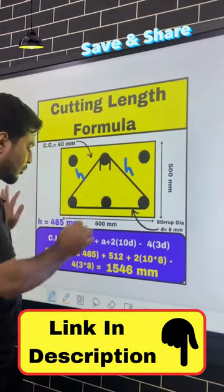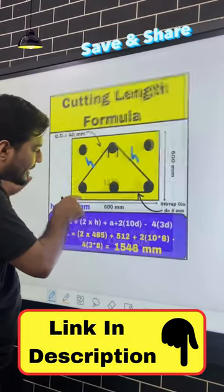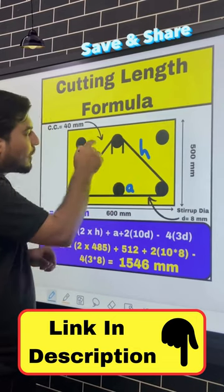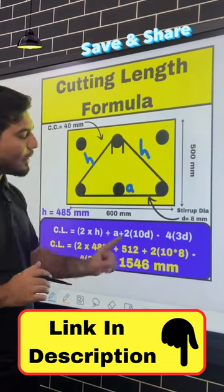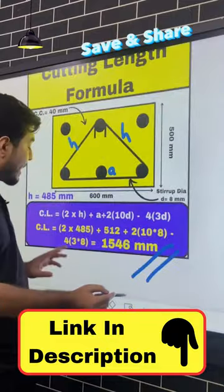So we will have 2 times A, plus 2 times the hook length, and deduct for the bends. We will get the final cutting length answer here at 1546 mm. Thank you very much.